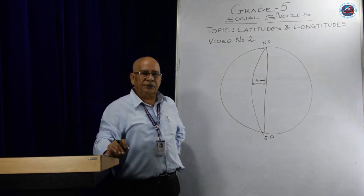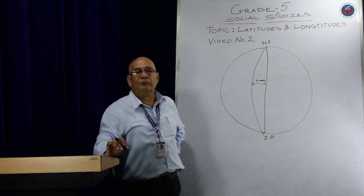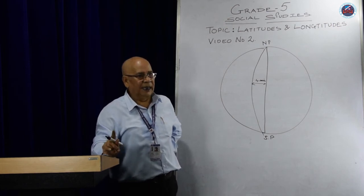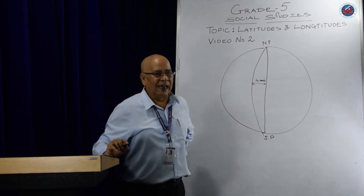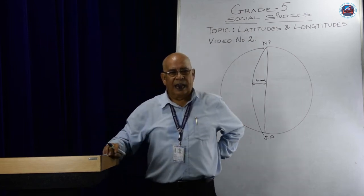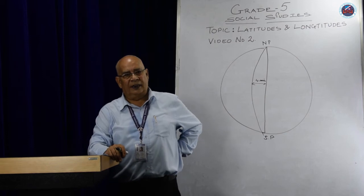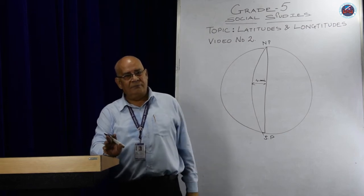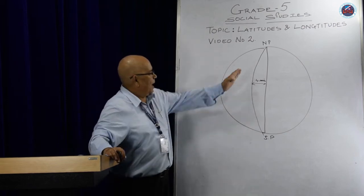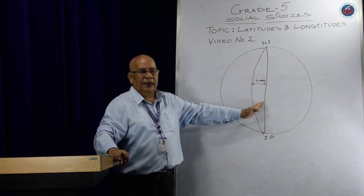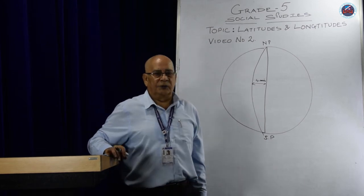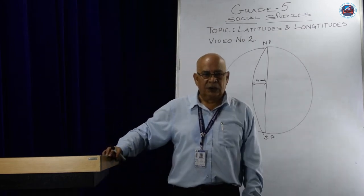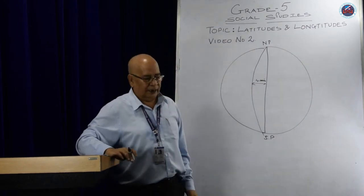Longitudes are also known as meridians. The most important meridian is the prime meridian. The prime meridian passes through the Royal Observatory of Greenwich Village near South London.